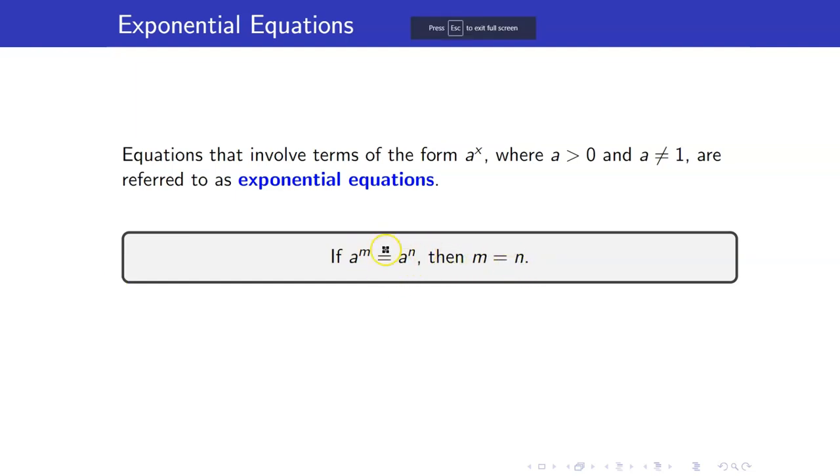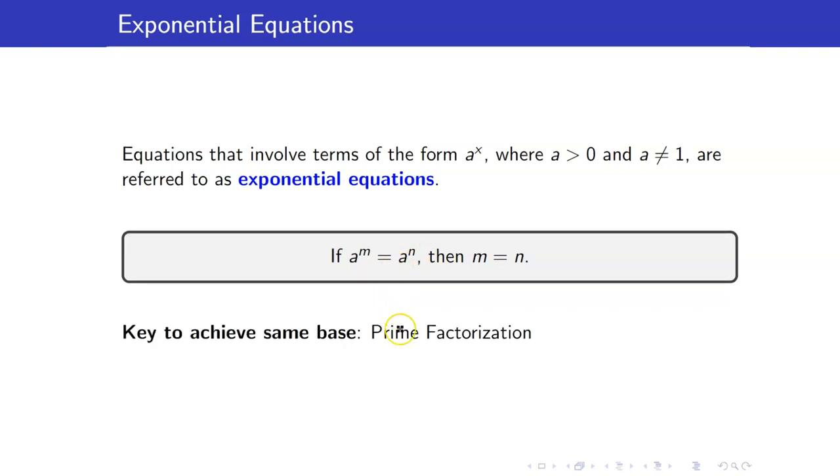What is this saying? This is saying that if you have two numbers which are equal and their bases are equal, then their exponents must be equal. You can only bring down the exponents when the bases are equal. So this is what we want to achieve. We want to achieve same base. And how do we achieve same base? The key to achieve same base is prime factorization.